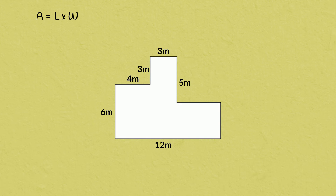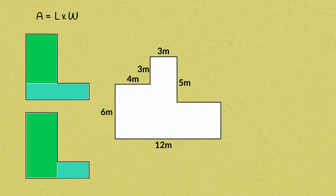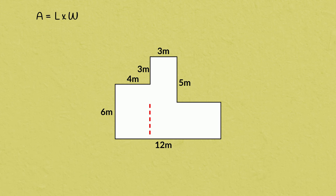Let's try this strategy again with a different compound shape. We need to start by breaking the shape down into simple geometric shapes. There are different ways to do this. In our first example we used two rectangles, but we could have instead used a different pair of two rectangles. It's best to break the shapes down in a way that is easiest for you. I'm going to use three rectangles.